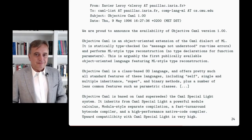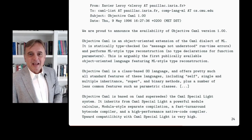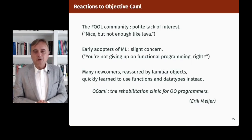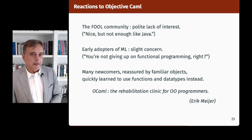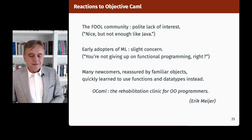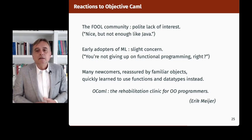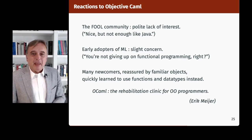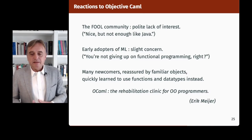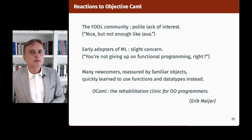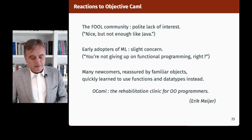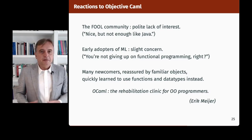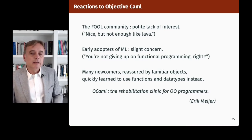That was announced in May 1996. The reactions were very interesting. From the FOOL community — the type theorists — there was a polite lack of interest: 'That's nice, but it's not enough like Java,' or not exactly what they would like. It started to be obvious that nobody would ever agree on a single approach to typed object-oriented programming. Early adopters of Caml Light and Caml Special Light showed some slight concern: 'You're not giving up on functional programming, right?' They had to be reassured. But we got many newcomers who were reassured by the availability of objects — something familiar to them — and then could learn rather quickly how to use functions and data types instead.